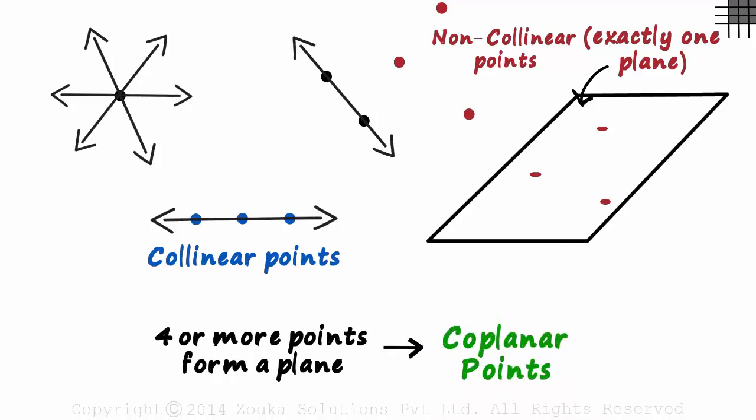Understand these concepts well. Three points are collinear if exactly one line passes through them. Exactly one plane passes through three non-collinear points. And if four or more points form a plane, they are called coplanar. Coplanar is basically one plane.